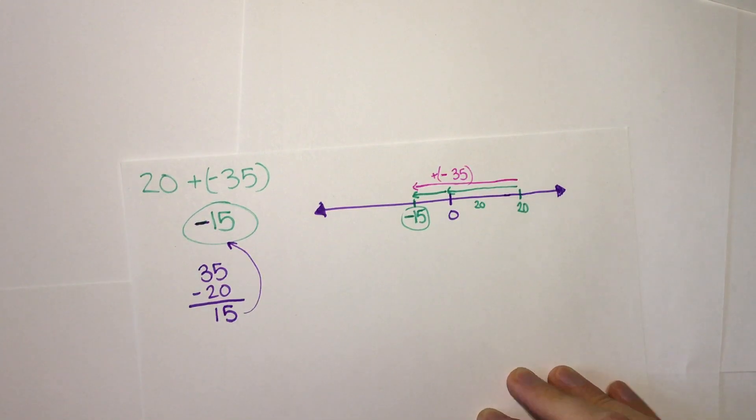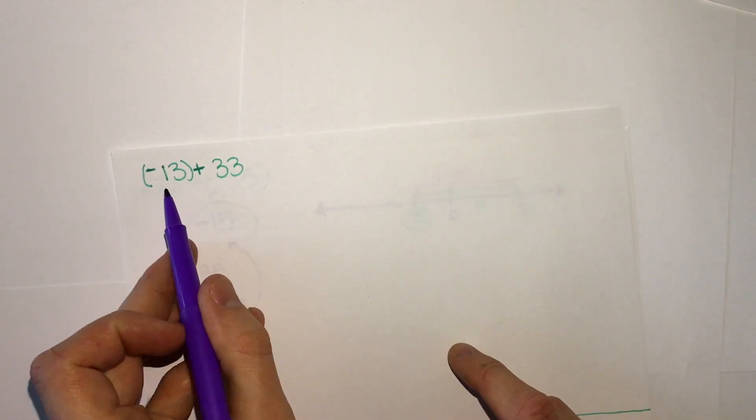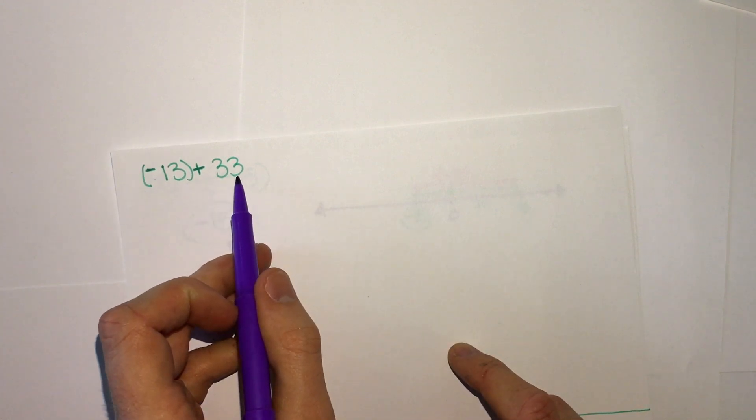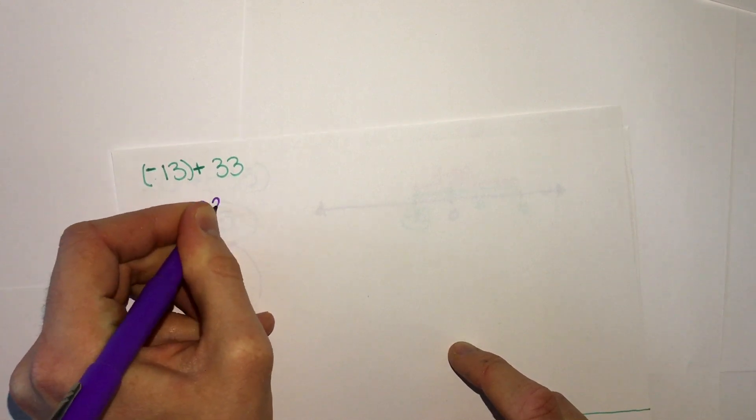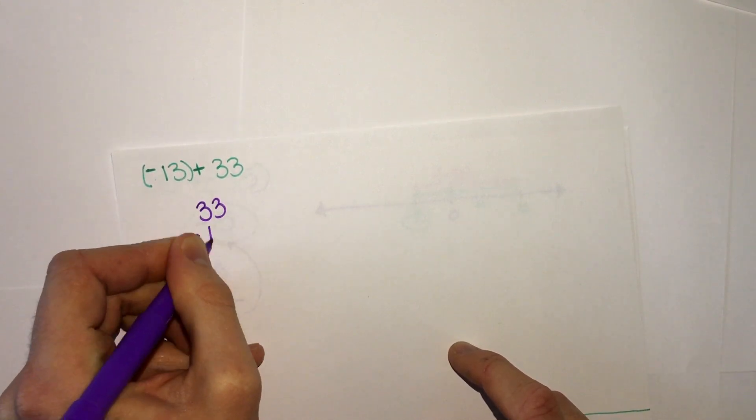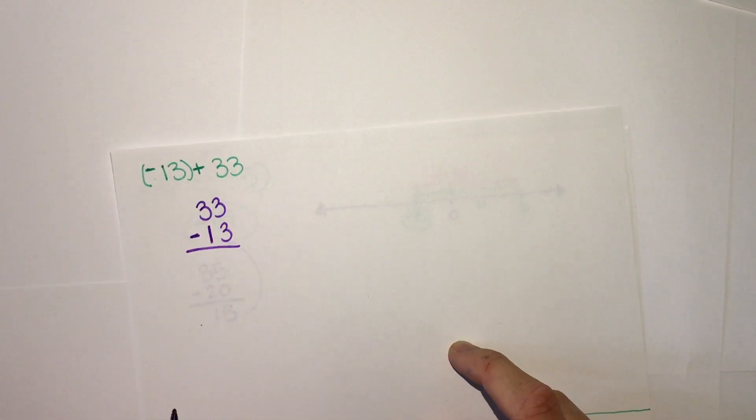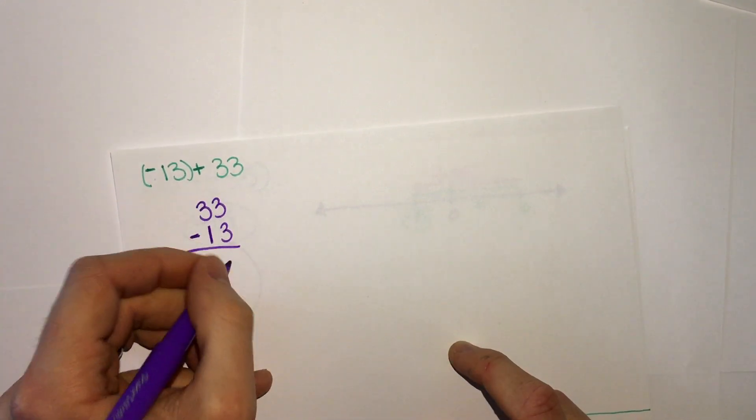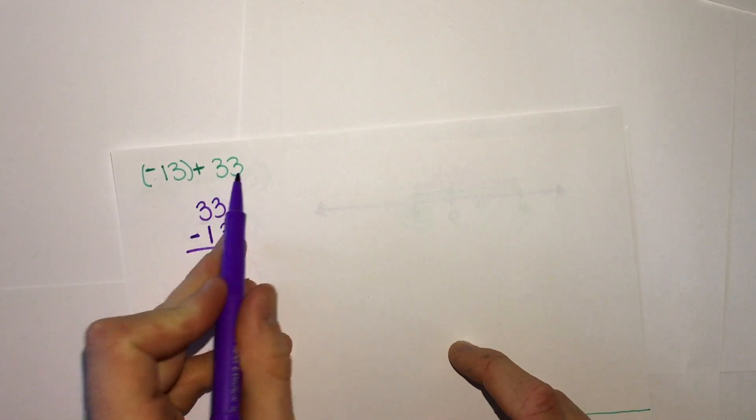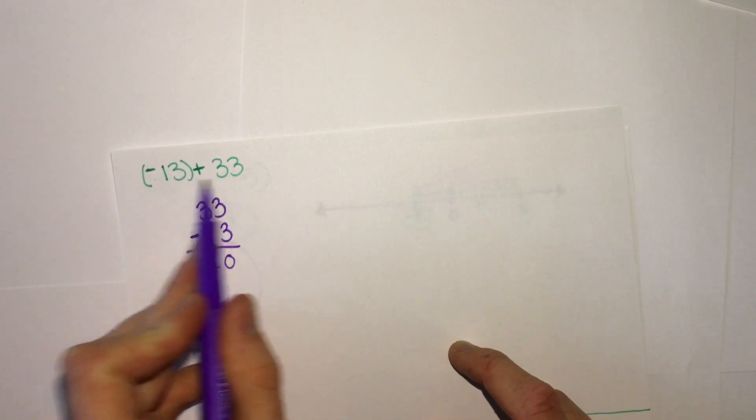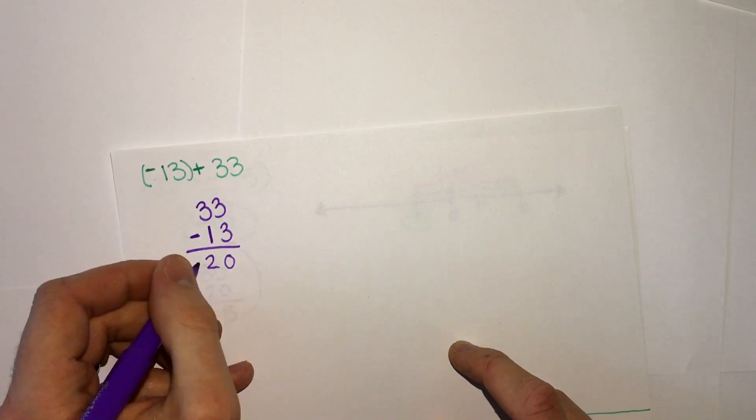So let's look at another example of that: negative 13 plus 33. Again, this time we're starting with a negative and we're adding a positive, but when we have a negative and a positive we do the same thing. Subtract the bigger number from the smaller number: 33 minus 13, 3 minus 3 is 0, 3 minus 1 is 2. And then we look which one is bigger, positive or the negative? This one's positive, so our answer would be positive.